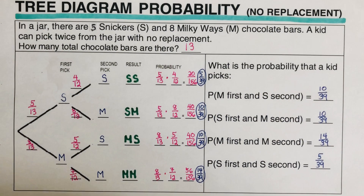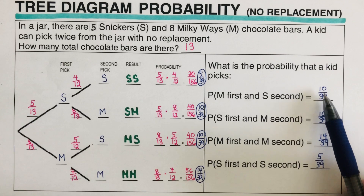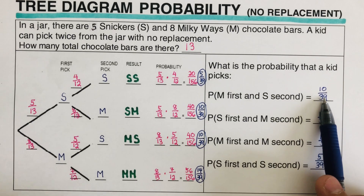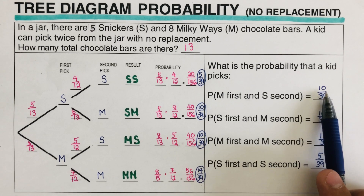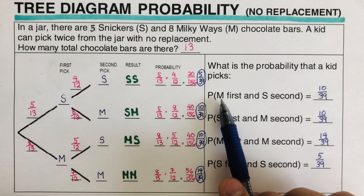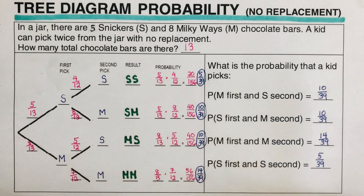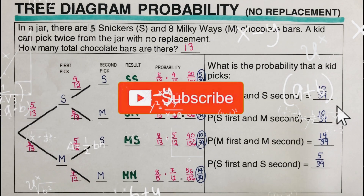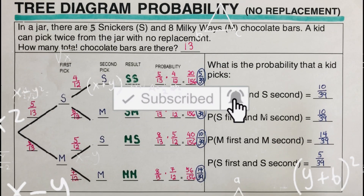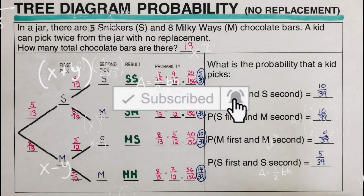What does ten over thirty-nine mean? It means that out of every thirty-nine picks, the kid would get a Milky Way and Snickers combination ten times. If you find this video helpful, hit like and subscribe for more math videos. See ya!